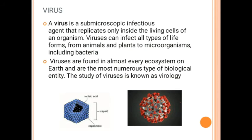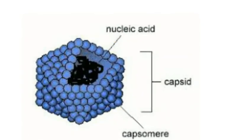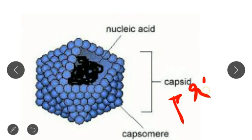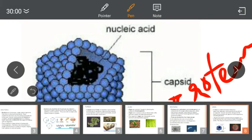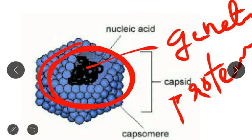Viruses are microscopic — we cannot really call them cells. A virus consists of a nucleic acid (the genetic material) surrounded by a protein layer. This protein layer surrounding the genetic material is known as the capsid. So the basic structure of a virus is: nucleic acid (genetic/nuclear material) enclosed within a protein capsid layer.